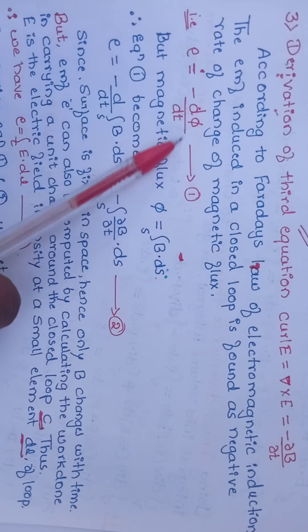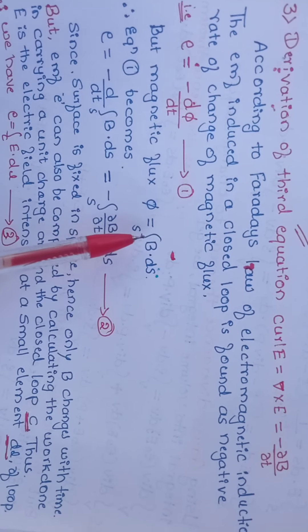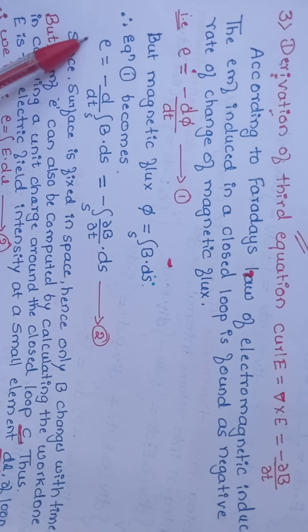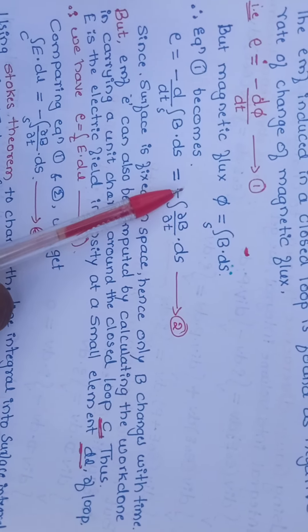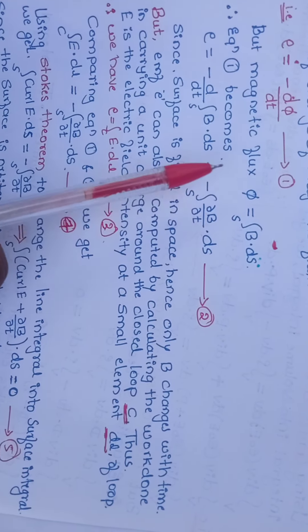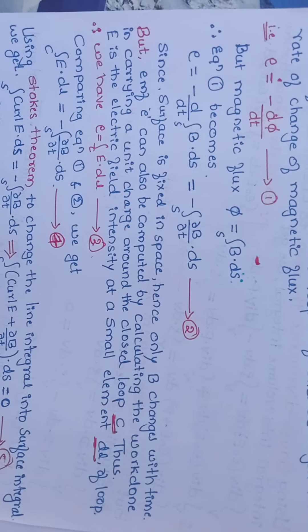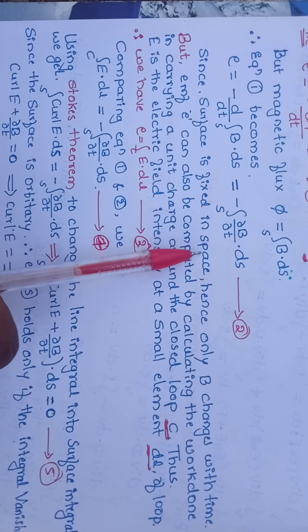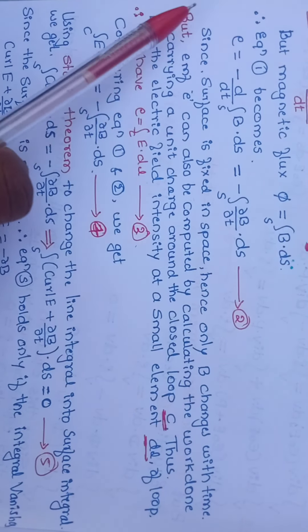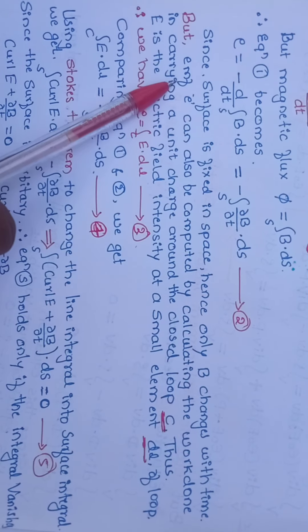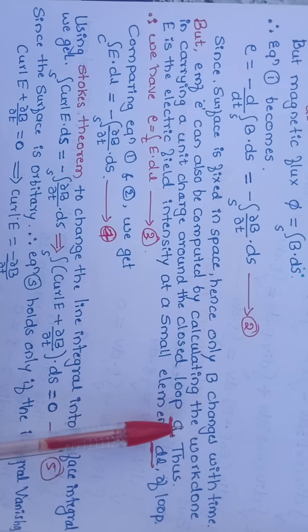Therefore the EMF, e, equals the negative rate of change of magnetic flux Φ. Call that equation number 1. The magnetic flux is given by Φ equals the surface integral of B dot dS. Substituting into equation 1: e equals minus d/dt of the surface integral of B dot dS, which equals minus the surface integral of ∂B/∂t dot dS. Call that equation number 2. The surface is fixed in space, so only B changes with time.